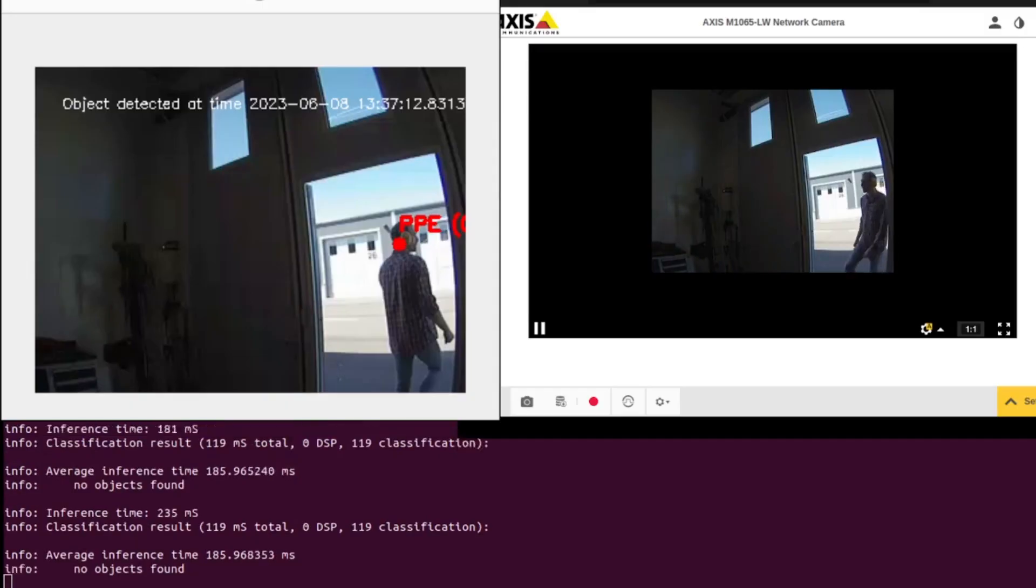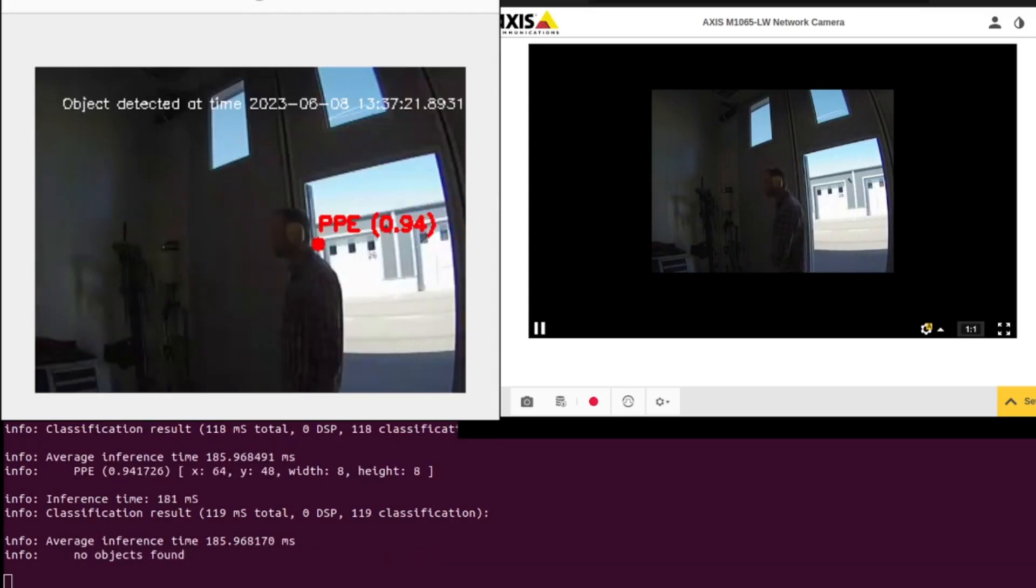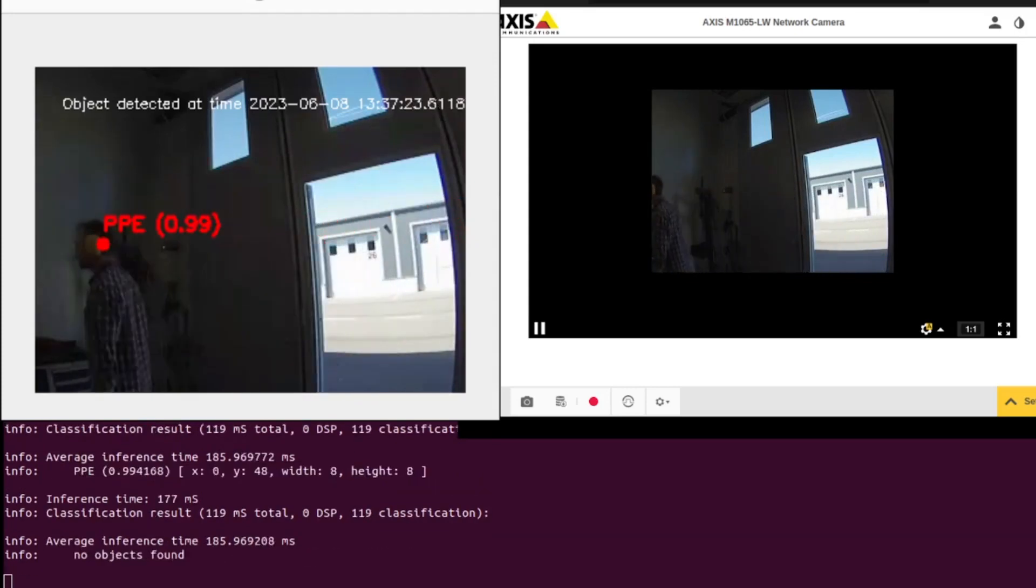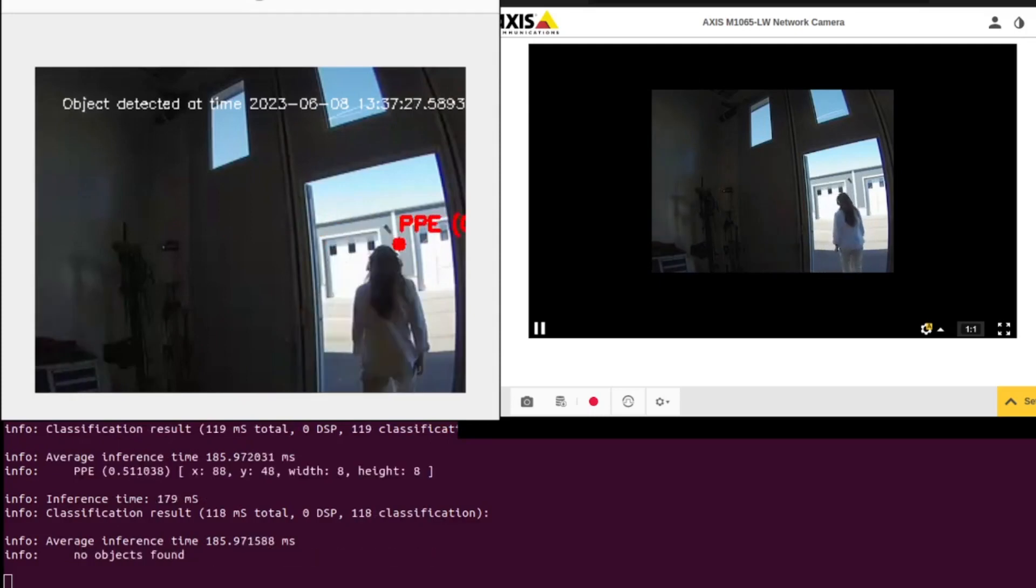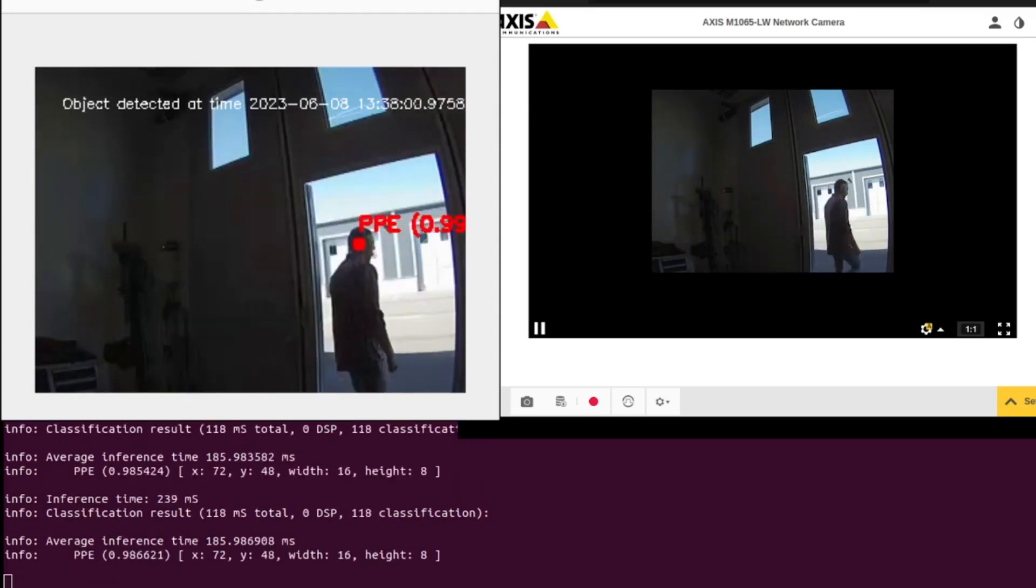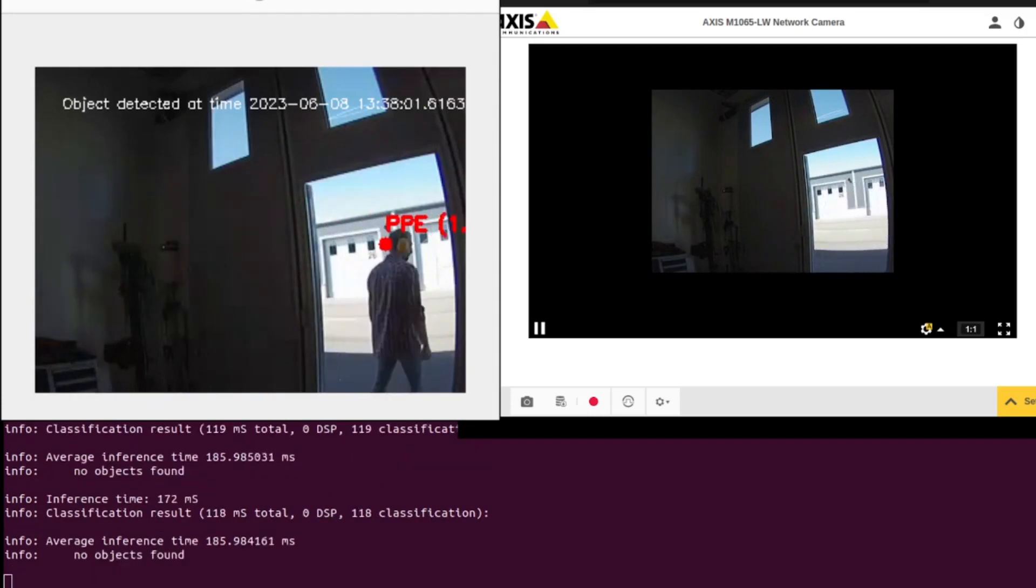So the first model detects the personal protection equipment and we can see at the top right we have the live video from the Axis camera. Top left shows the frames where the equipment has been detected and at the bottom we can see some additional information provided by our applications such as the average inference time.